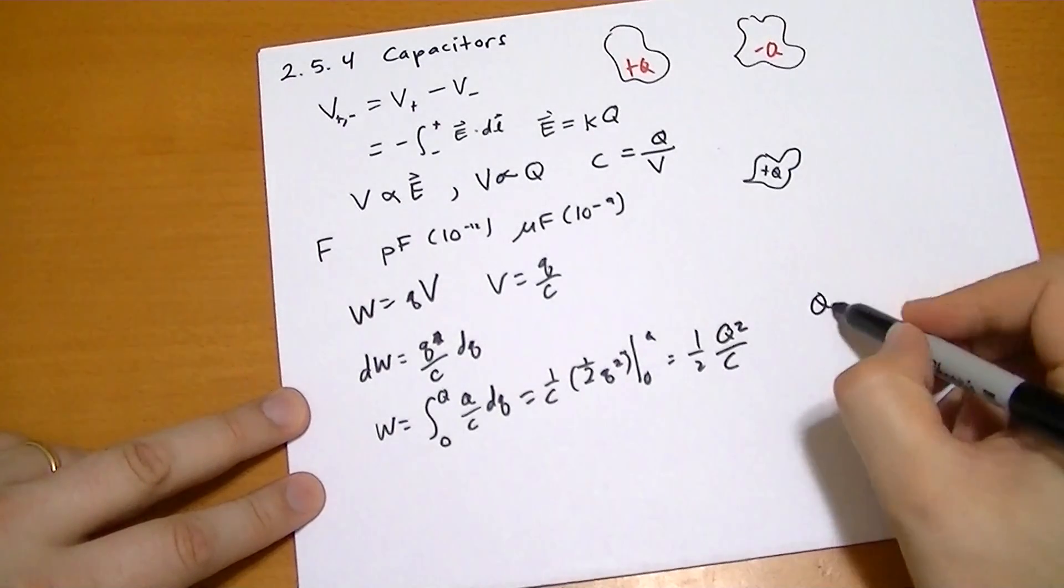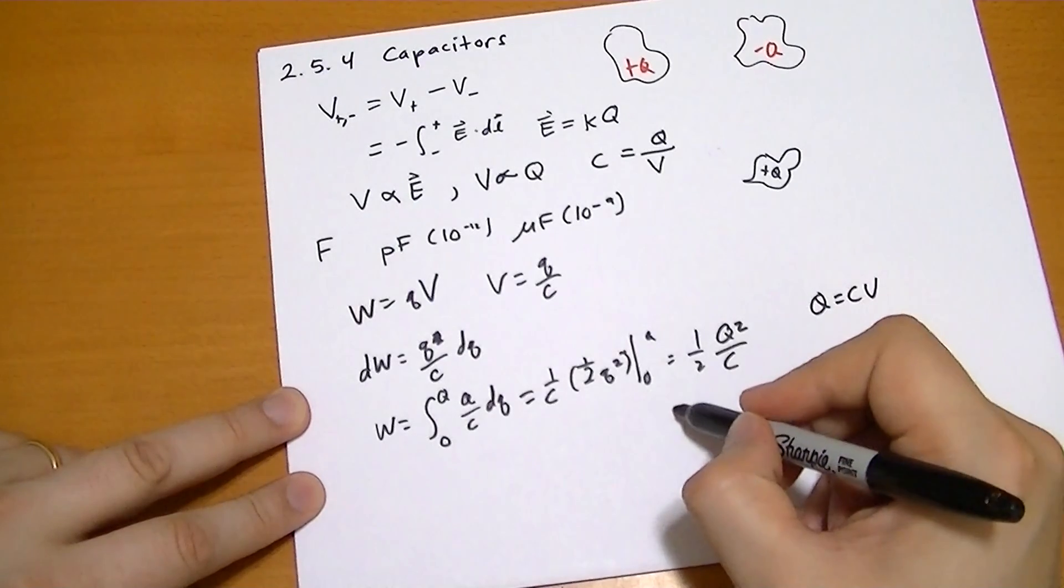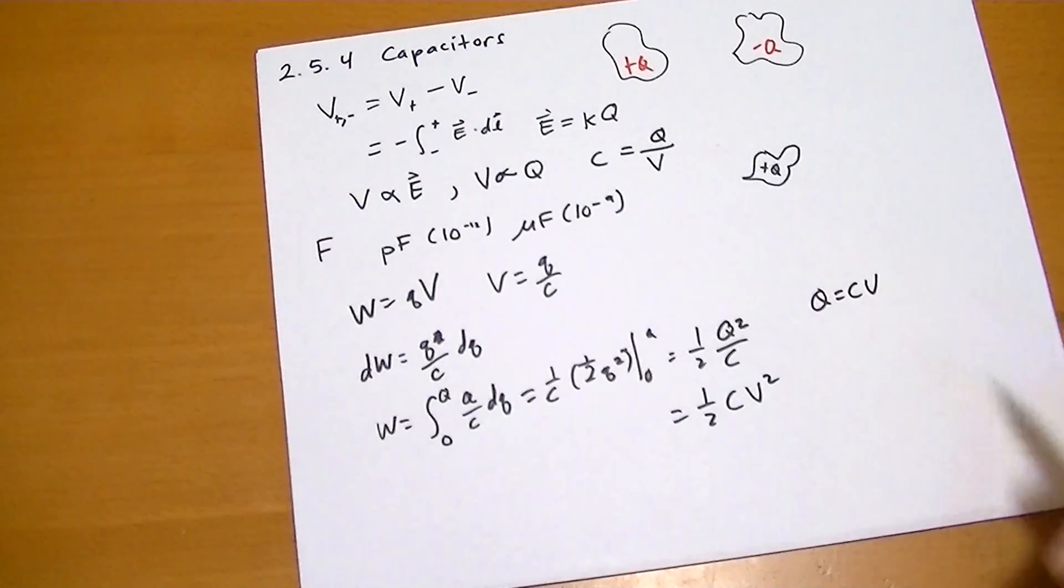And we can rewrite that if we use Q equals CV. Then we just get one half CV squared.